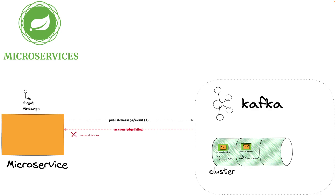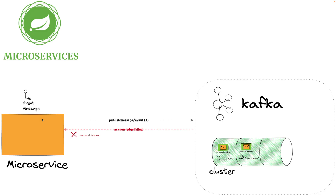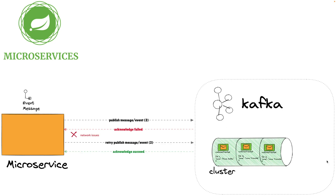This time we have some network issues. The broker could not send the acknowledgment because of a transient failure — for example, the producer was not available at that moment. What happens now is that the producer will retry sending the event since it didn't receive the acknowledgment. It will retry sending the same event, and maybe this time it will work.